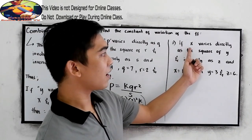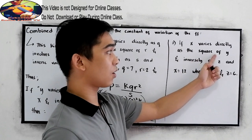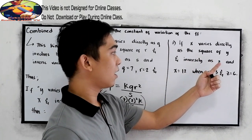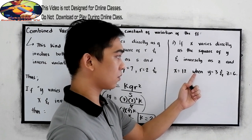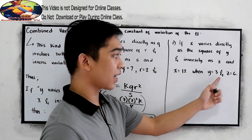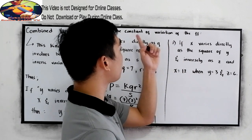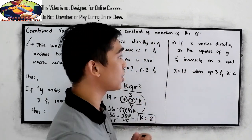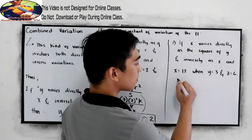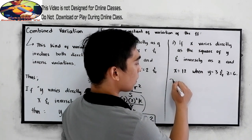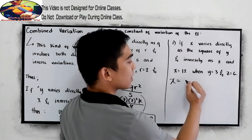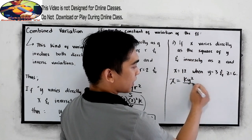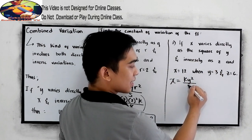Next, if x varies directly as the square of y and inversely as z, x is equal to 12 when y is equal to 3 and z is equal to 6. We need to find the constant of variation. So let us write the equation of variation: x varies directly as y squared and inversely as z.